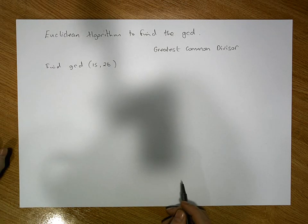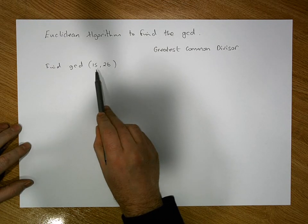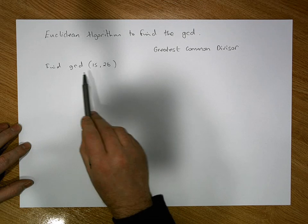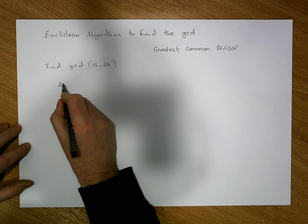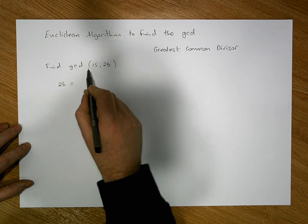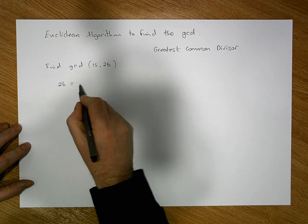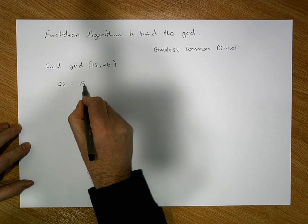The process goes like this: what we do is we take the largest of the two numbers that we need to find the GCD of, in this case 26, and what we'd like to do is write 26 down as a sum, a multiple of 15, some multiple of 15, plus some remainder.